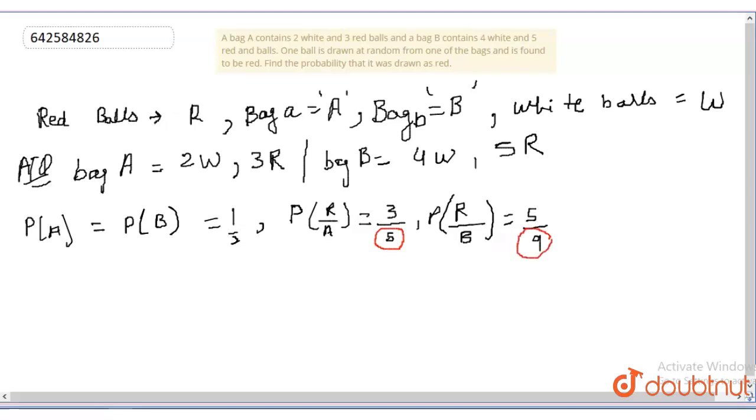This 5 is the total number of balls in bag A. That is 2 white plus 3 red equals 5.